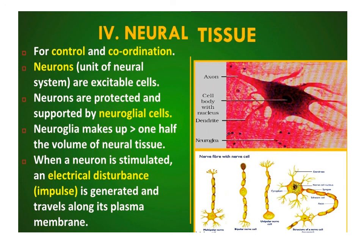Neural tissue controls the body's functions and responsiveness to changing conditions. Neurons are the functional unit of neural tissue and are excitable cells. Neural cells make up more than half the volume of neural tissue and protect and support neurons. When a neuron is stimulated, an electrical disturbance or impulse is generated and travels along its plasma membrane. There are different types of nerve fibers with nerve cells.